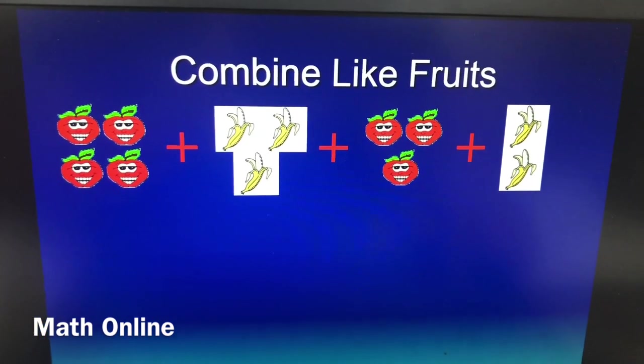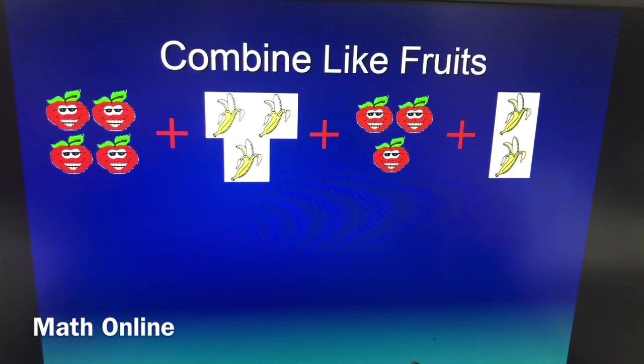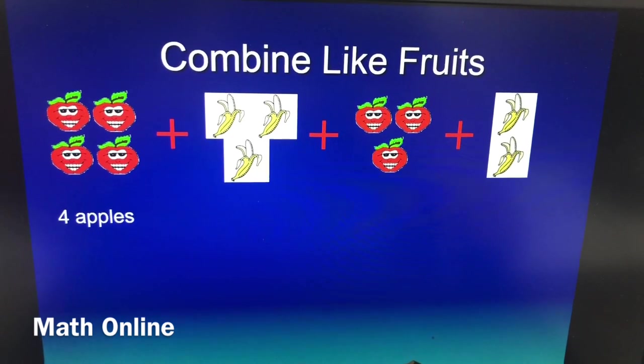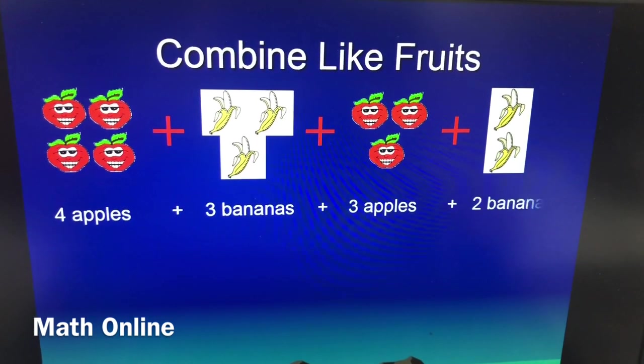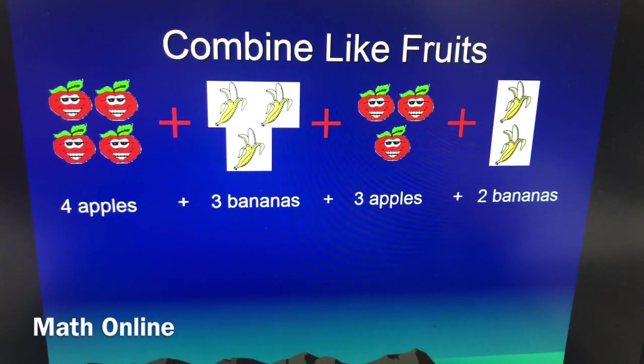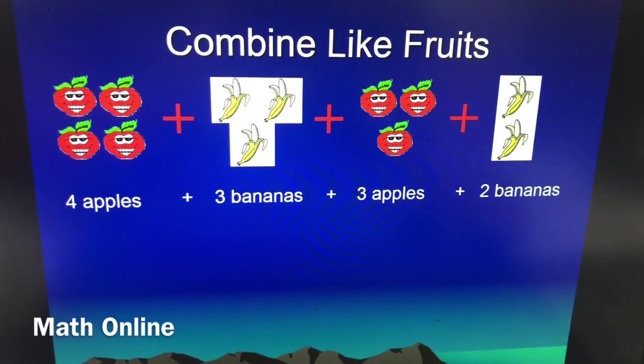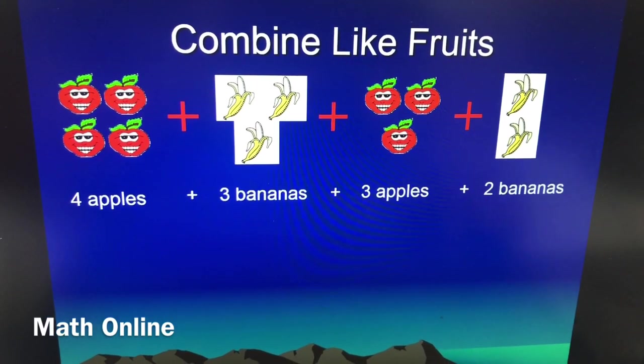So what we want to do is label the names of each individual fruit. So here we go. In this case we have four apples, we got three bananas, three apples, and two more bananas. So our goal is to combine these items. Combine like terms: bananas go with bananas and apples go with apples.